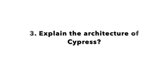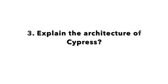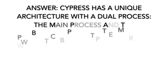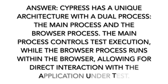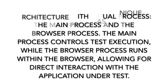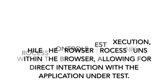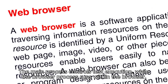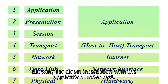Question 3: Explain the architecture of Cypress. Cypress has a unique architecture with a dual process — the main process and the browser process. The main process controls test execution, while the browser process runs within the browser, allowing for direct interaction with the application under test.